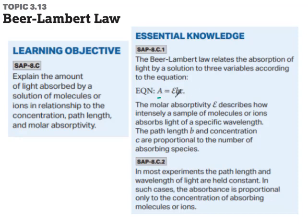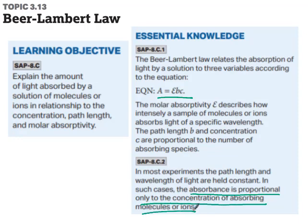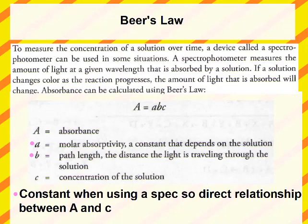Beer-Lambert Law: A = εbc, where ε (epsilon) describes how intensely a sample absorbs light at a specific wavelength, b is path length, and c is concentration. Concentration is proportional to the number of absorbing species. In most experiments, path length and wavelength are held constant, so absorbance is proportional only to the concentration of absorbing molecules or ions.